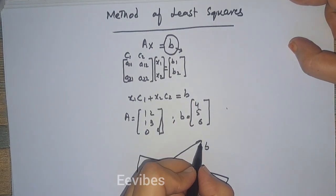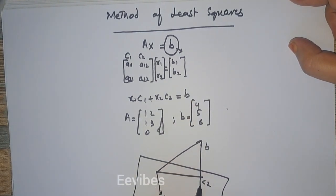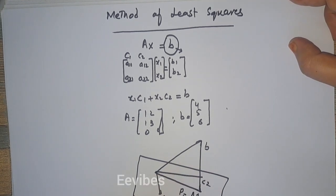According to the method of least squares, we draw the projection from B on the column space of A, and we mark it as AX̂, which is actually the projection of B on A.